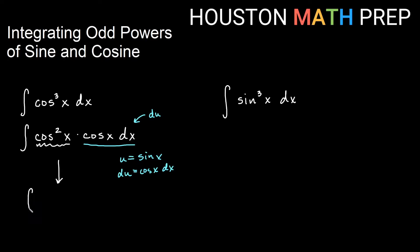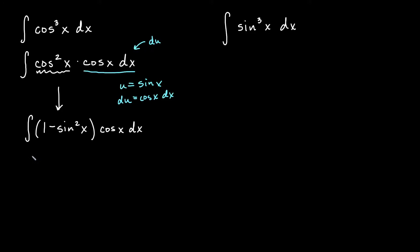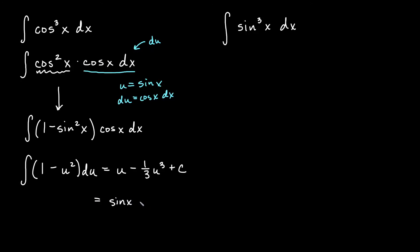We'll think of this as the integral of (1 minus sine squared x) times cosine x dx. Now our u-substitution will work. We plug that in and get the integral of (1 minus u²) du. That gives us u minus one-third u cubed plus C. Then we replace u with sine x, so our integral ends up being sine x minus one-third sine cubed x plus C.